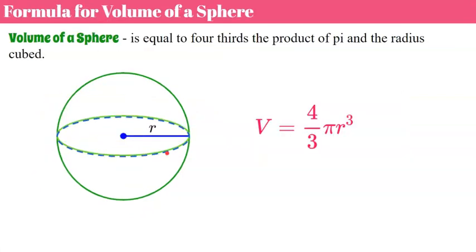Now let's talk about the formula for the volume of a sphere. The only dimension we can measure on a sphere is our radius, just like on a circle. We can find circumference, surface area, and volume. The volume formula is four-thirds times pi times the radius cubed.